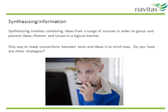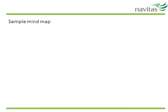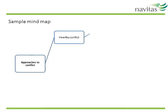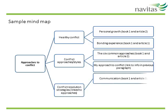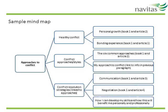One way to help you make connections between texts is to mind map. Here's an example of a mind map on the assignment topic 'Approaches to Conflict' that synthesises information from four sources. The student has grouped the information into three main sections, then created subsections and indicated which readings link to that subsection. If each section is turned into a paragraph, then each paragraph will contain information from two or more different sources, giving a more comprehensive analysis than if the information was only taken from one source and simply summarised.